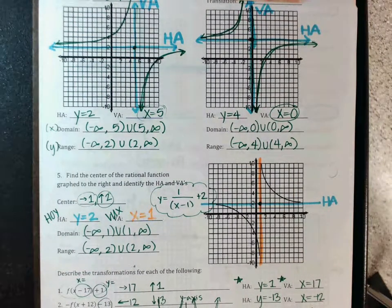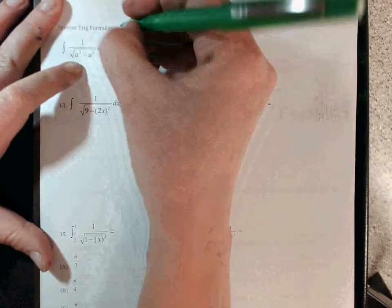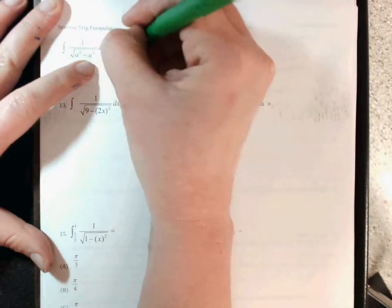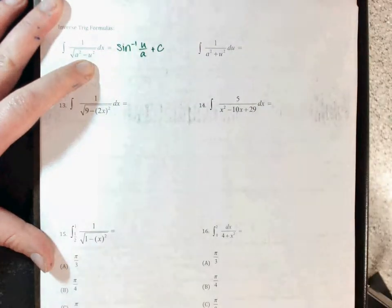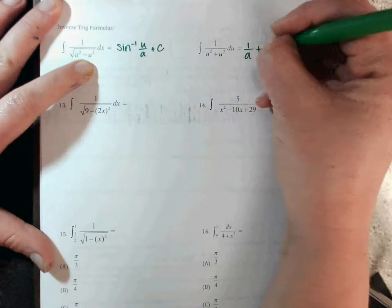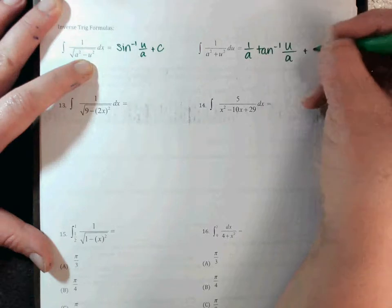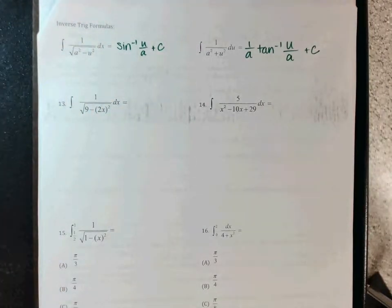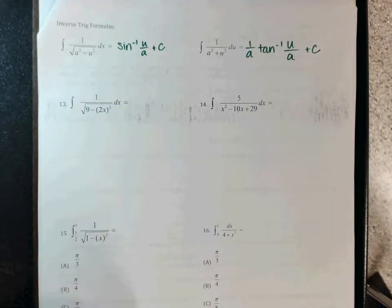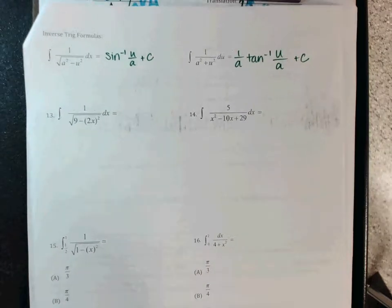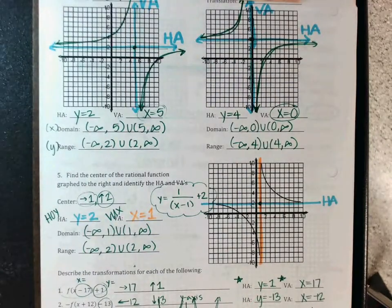I'm going to skip the inverse trig problems but I'll write the formulas down. The integral formula for inverse sine is inverse sine of u over a, plus c. The other formula is one over a times inverse tan of u over a, plus c. Both are on your pink sheet. I'll help with those on Monday if you need it.